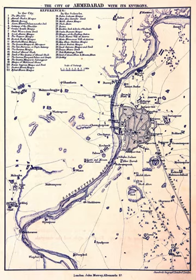16th century: 1514 – Arrival of Spanish traveller Barbosa and construction of Rani Sipri Masjid. 1535 – Humayun captured Ahmedabad and ruled for nine months; Bahadur Shah recaptured. 1555 – Arrival of Arabian historian Udadbar. 1572 – Sidi Saiyyed Mosque with the world-famous carved stone tree constructed. 1572 – Akbar captured the city, marking the end of the Sultanate.